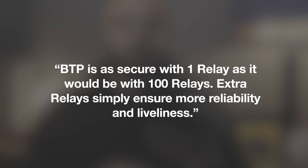In this model, the relays do not necessarily affect the security of the system because they're simply transitive entities who pass information from one chain to the next. That said, relays can affect BTP from an availability perspective because relays have to be up and functioning for this to work. So there's an economic incentive for relays to operate in a highly available and fault-tolerant manner. Verifier contracts are the key to security here, not relays. Cryptography is the core operating mechanism for verifying messages passed between blockchains. As ICON's own BTP specifications state: "BTP is as secure with one relay as it would be with 100 relays. Extra relays simply ensure more reliability and liveliness."